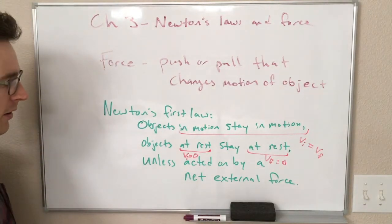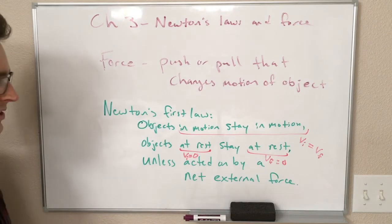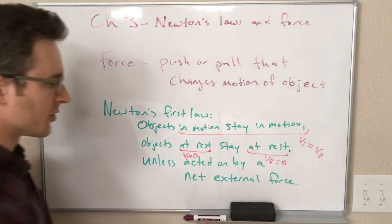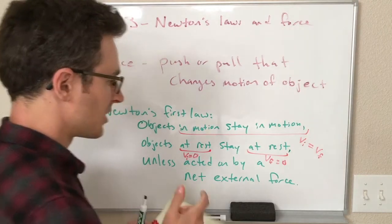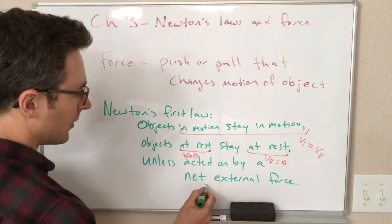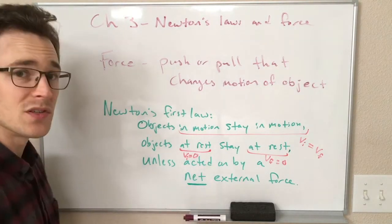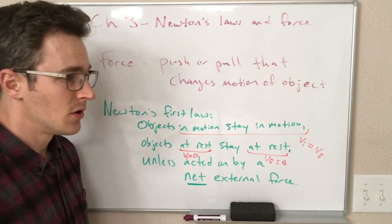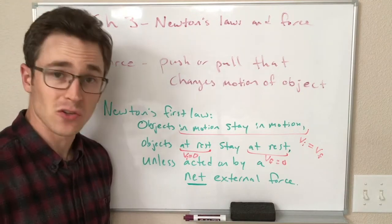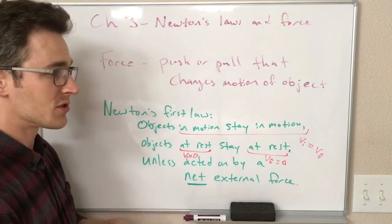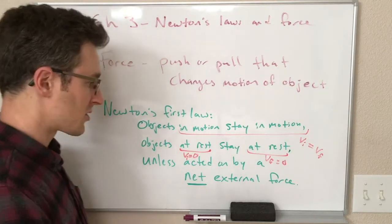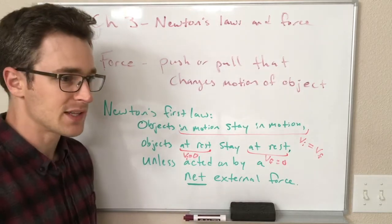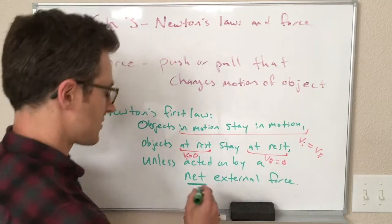Now we get to the unless. Unless acted on by a net external force. So we know a force is a push or a pull acting on an object. Net here is because, as we will see, we can have forces in opposing directions that cancel each other out. And if we have two forces that cancel out, they will not affect the motion of the object. So when we say a net force here, it means we need to have something unbalanced.